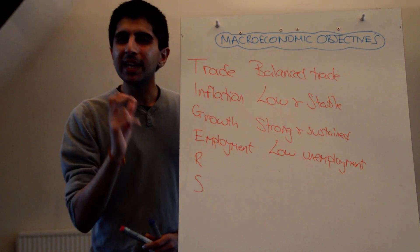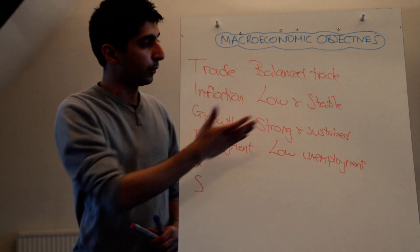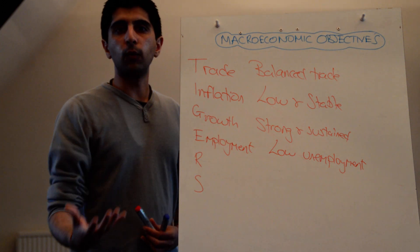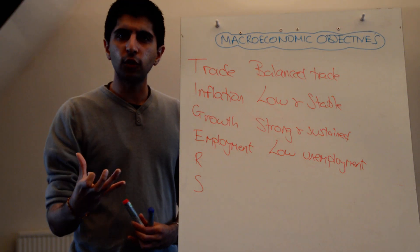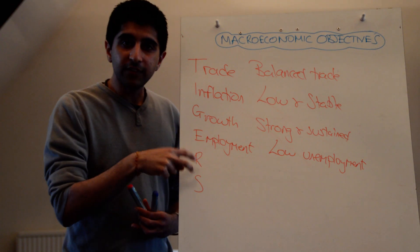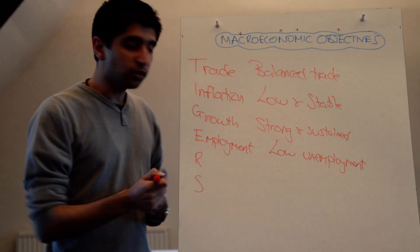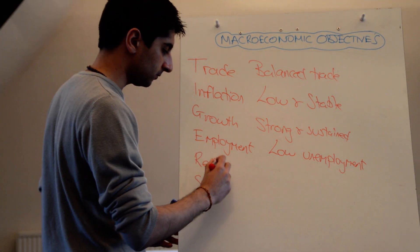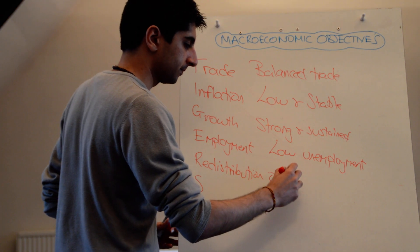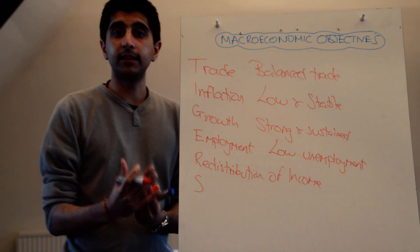These are the four key macro objectives. Regardless of the government, they will target these four indicators and look for these specific objectives. But there might be some other governments around the world that also have other objectives too. R is to redistribute income — looking for income equality, as fair as society desires.